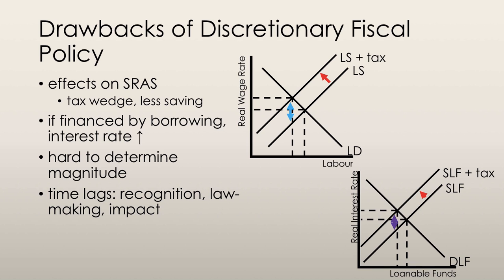The government borrows money from the loanable funds market, increasing the demand for loanable funds and thus the interest rate — investment slows as a result. It is also very difficult to determine the amount by which taxes or government spending should be changed. The actual output gap — another word to describe either a recessionary or inflationary gap — is very hard to guess and can only ever be estimated.